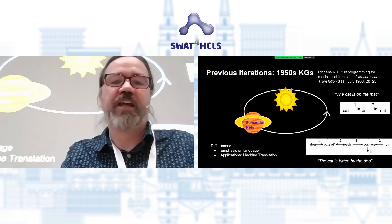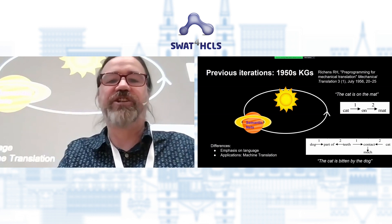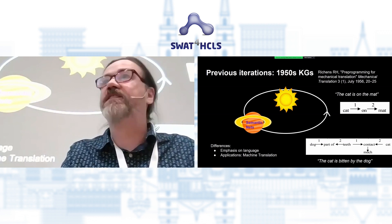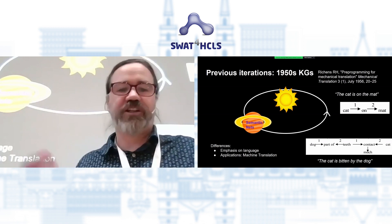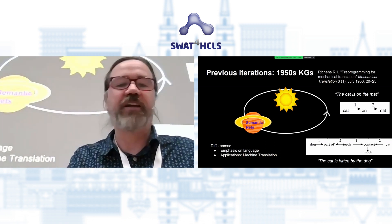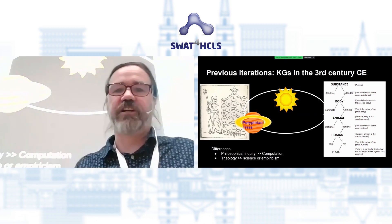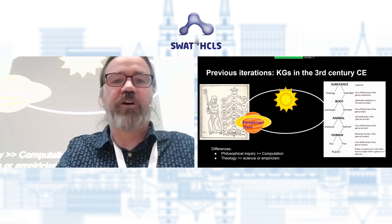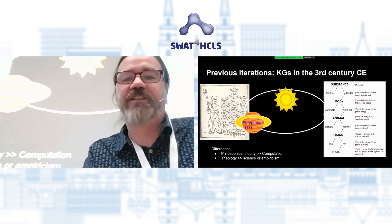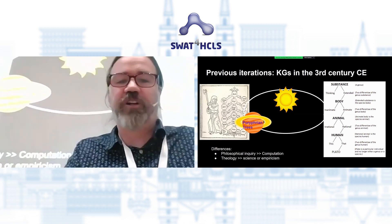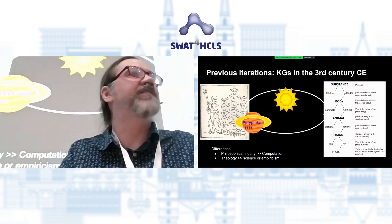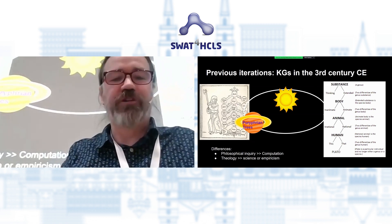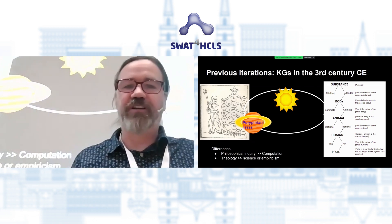We can go back even further — to about the third century of the common era — with philosophers like Porphyry, who came up with one of the first ontologies or knowledge graphs, classifying things as substances, bodies, animals, humans, with instances like Plato at the bottom. The emphasis there wasn't on making structures computable — it was driven more by theological and philosophical concerns rather than computation — but hopefully we've moved past some of that. You can see these ideas rotating like planets around the sun in the solar system.